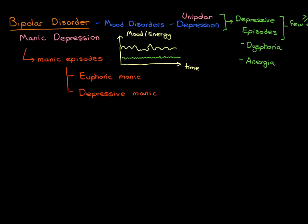In depressive manic episodes — the more common type — your mood is still low; you do not feel happy. That's something in common with depressive episodes — dysphoria remains. But the major difference, and what mania is all about, is that your energy level goes through the roof. In a depressive manic episode your mood remains low — you are not happy, you are irritated, agitated, anxious — but your energy level goes through the roof.